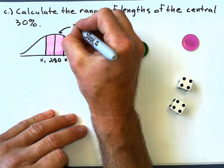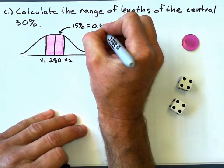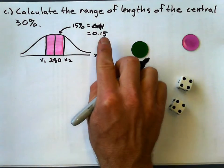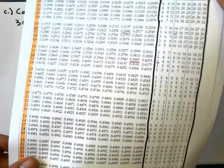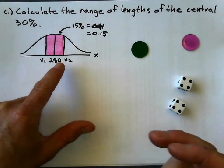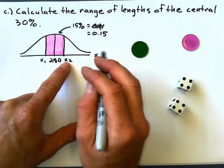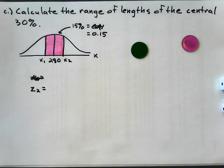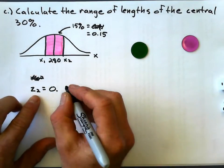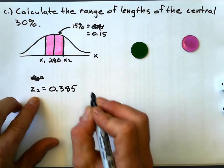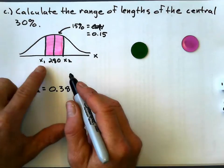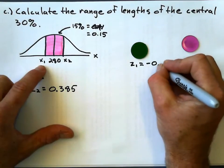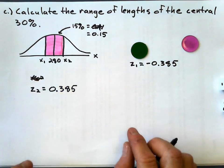If that's a central 30%, that's 15% on one side, which is 0.15. And I look up that probability, 0.15 on my sheet, like we've been doing, and I get a Z value. The Z value I get for X2, should we do X2 first, because that's going to give me the positive one. X2 will give me Z2 of 0.385 for my Z value on that side. And, of course, my other Z value, Z1, on the other side, it's going to be symmetrical, so it's just going to be a negative 0.385 because it's below the mean.